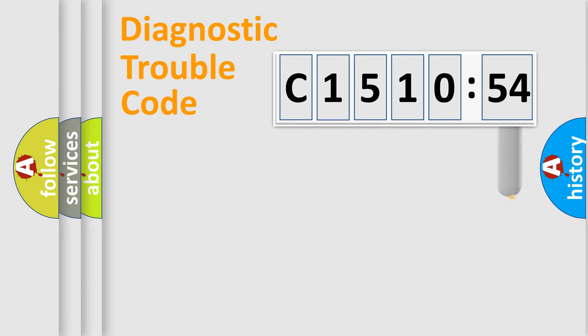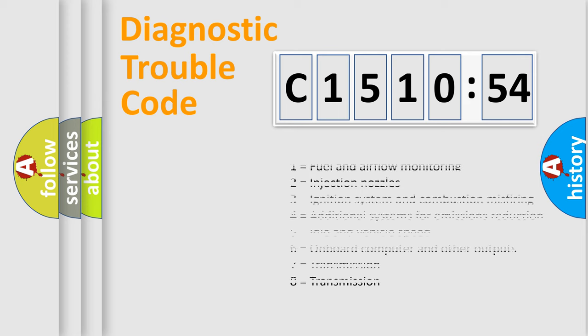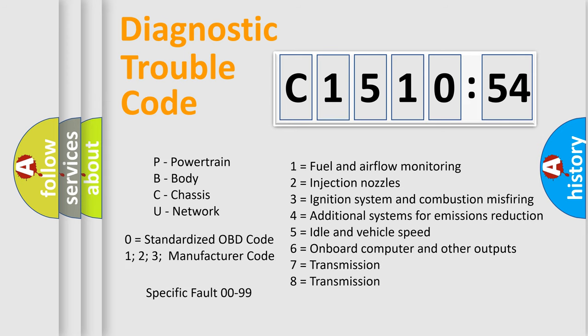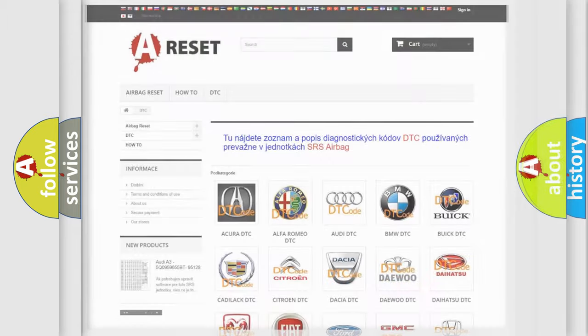Only the last two characters define the specific fault of the group. The add-on to the error code serves to specify the status in more detail. For example, a short to the ground. Let's not forget that such a division is valid only if the other character code is expressed by the number zero.